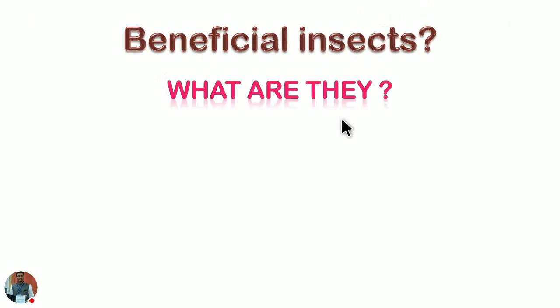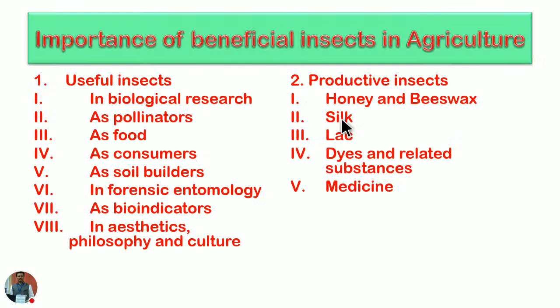What are these beneficial insects? Beneficial insects are those which carry out activities that help human beings either directly or indirectly, and they provide products during the activities of their life cycle. This is a popular classification: the importance of beneficial insects in agriculture is either of no economic importance or of economic importance. Economic importance is further divided into useful insects and productive insects.